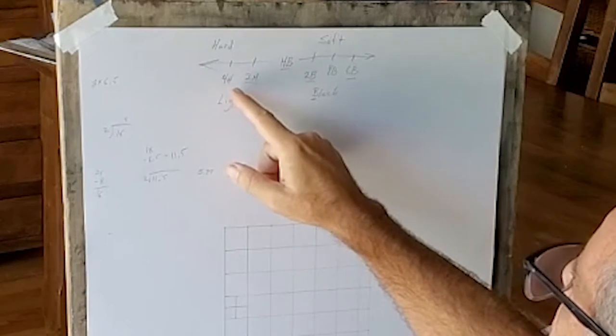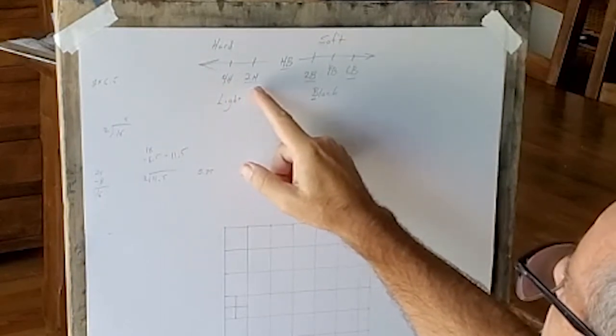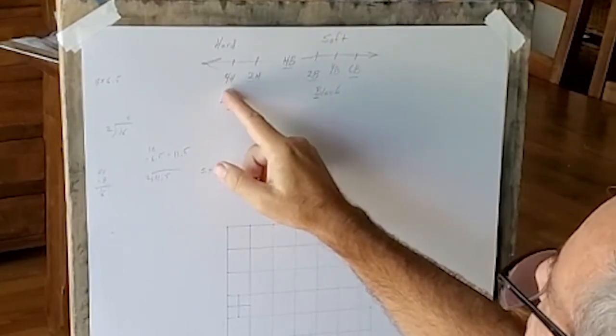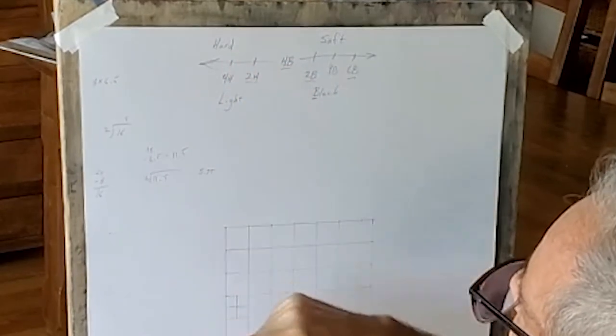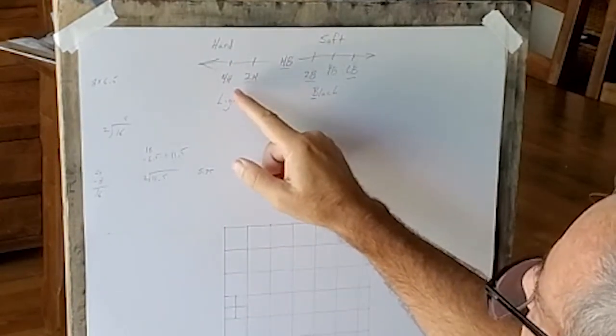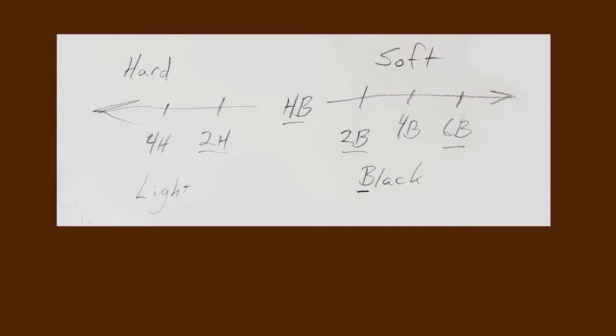The higher the number, so we have on this side 2H, 4H. A 4H would be a harder lead than a 2H, which would mean it is lighter than the 2H. A 4H is so light that we wouldn't, if we were using it the right way, we wouldn't even see it.